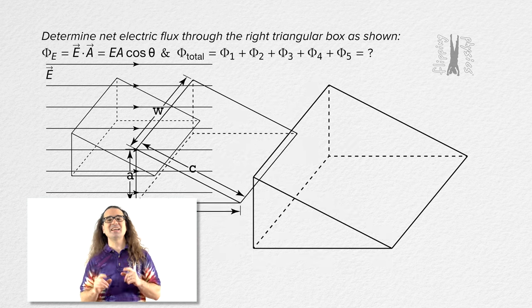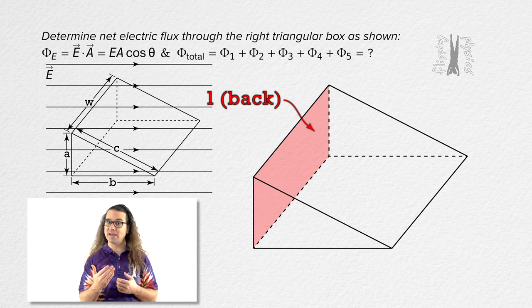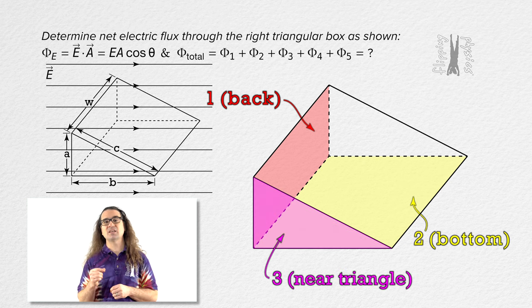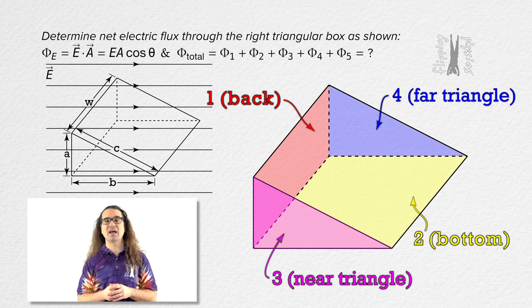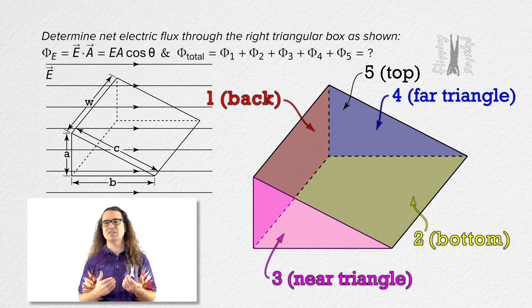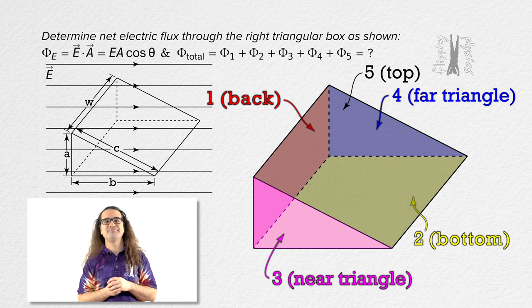Let's identify the left rectangular side as side 1 in red, the bottom as side 2 in yellow, the triangular side closest to us as side 3 in pink, the triangular side farthest from us as side 4 in blue, and the top side of the right triangular box — which is formed with the hypotenuse of the right triangle and the width of the box — as side 5 in black.